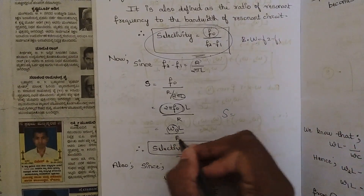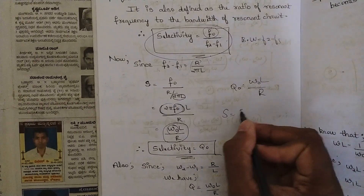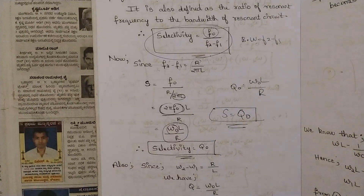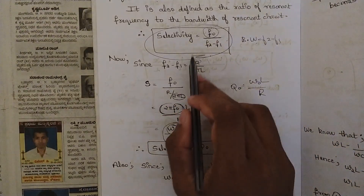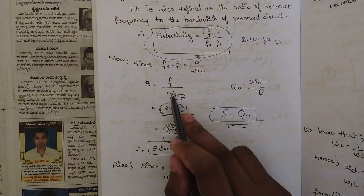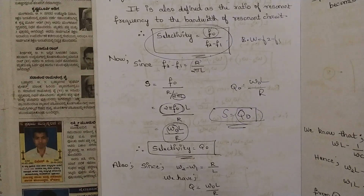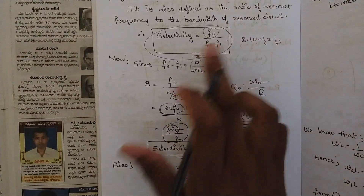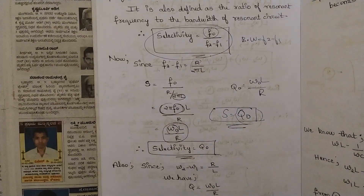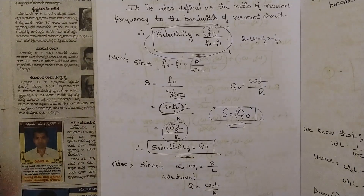We know that ω0·L/R equals Q0, the quality factor. So selectivity equals Q0 — selectivity is equal to the quality factor, with the applied condition that this holds at the resonating frequency. So if a question asks you to find the selectivity, whatever value of quality factor you get from the given data is equal to the selectivity — but only when the circuit is at resonance. This is the condition: selectivity equals Q0.